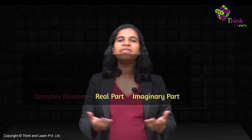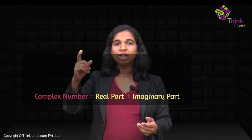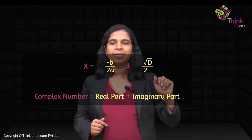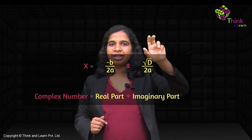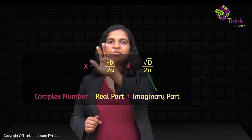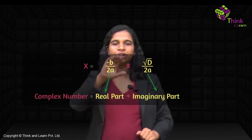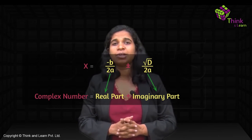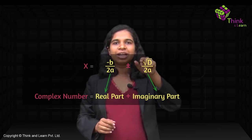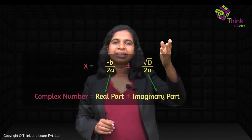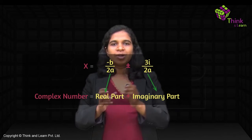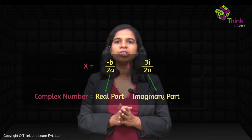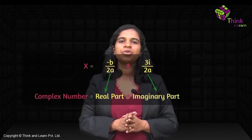Our root is (-b ± √D) / 2a, or equivalently -b/2a ± √D/2a. Since √D is imaginary (i × something) and -b/2a is real, the result is a real part plus an imaginary part — that is why we call it a complex number. These complex roots, just like irrational roots, will always occur in pairs because of the ± sign: one root is something + 3i and the other is something - 3i.